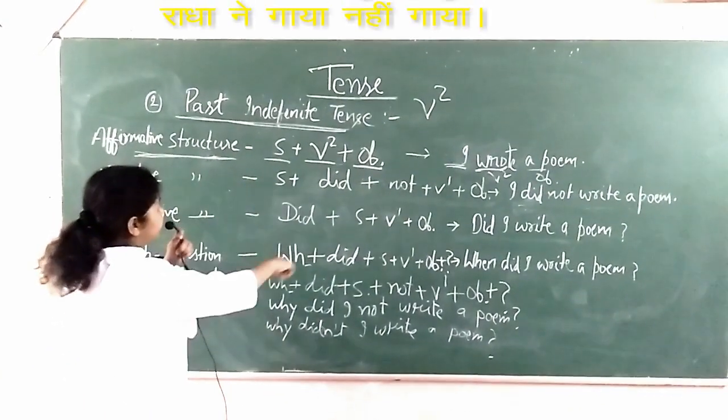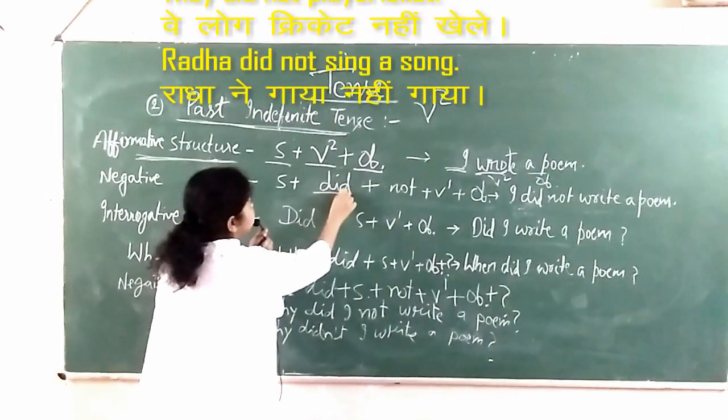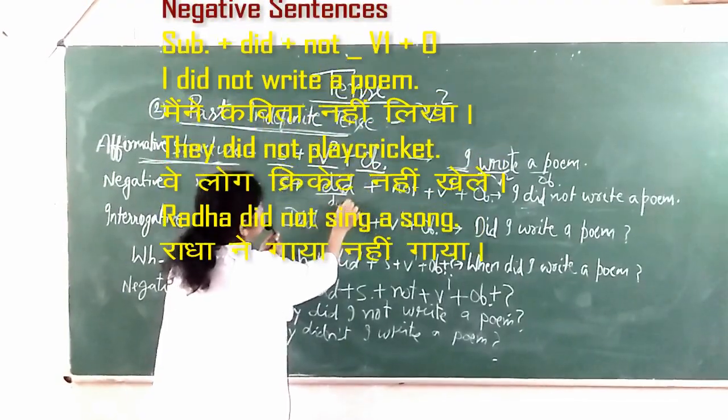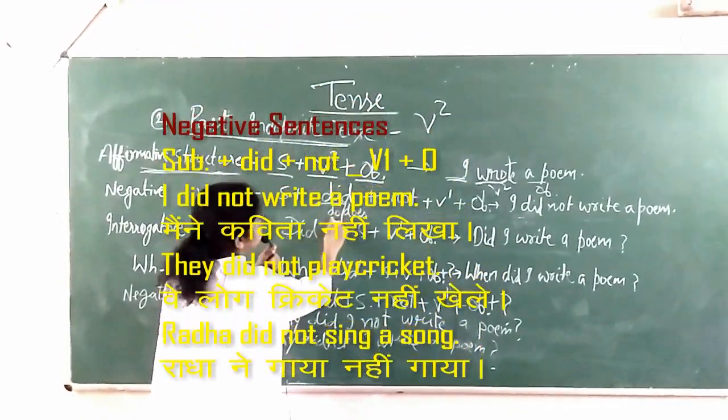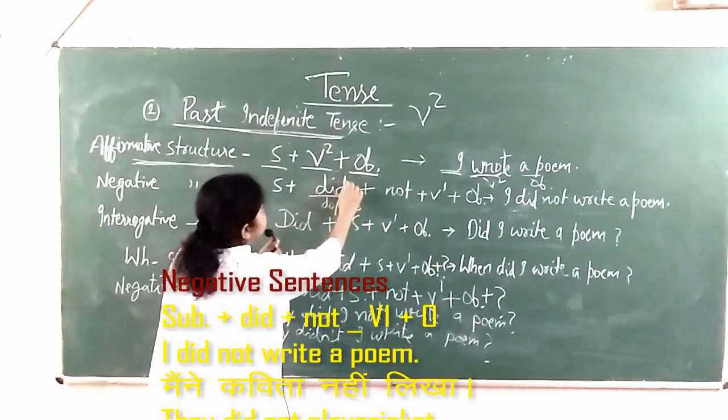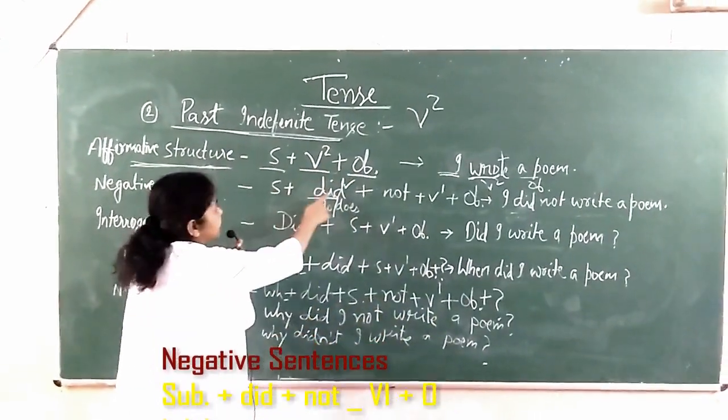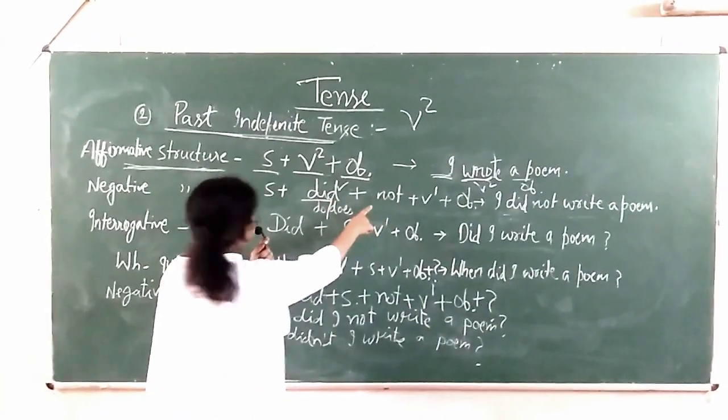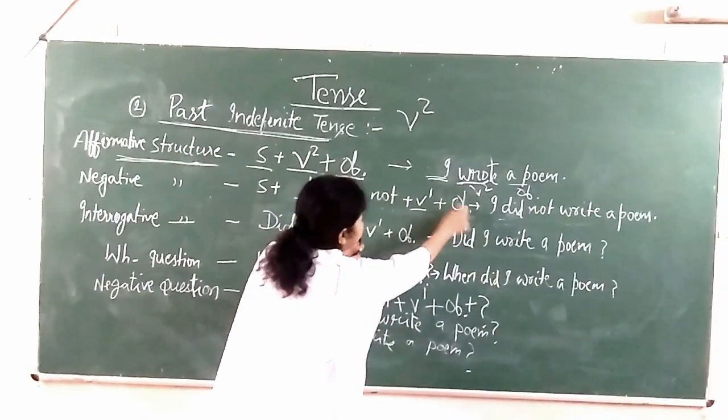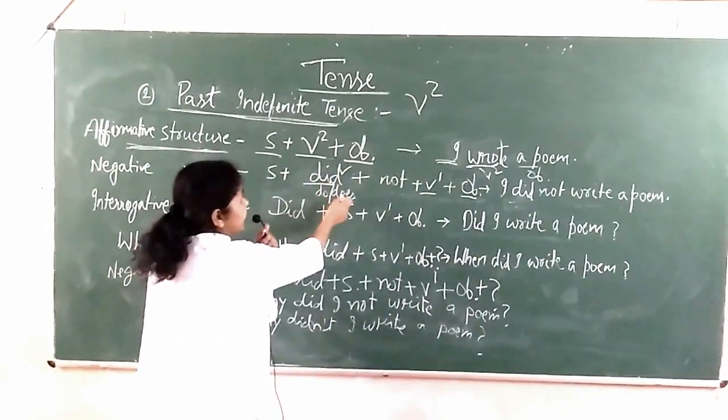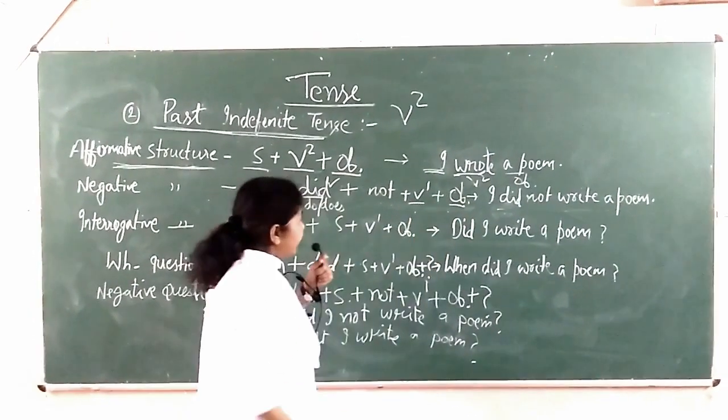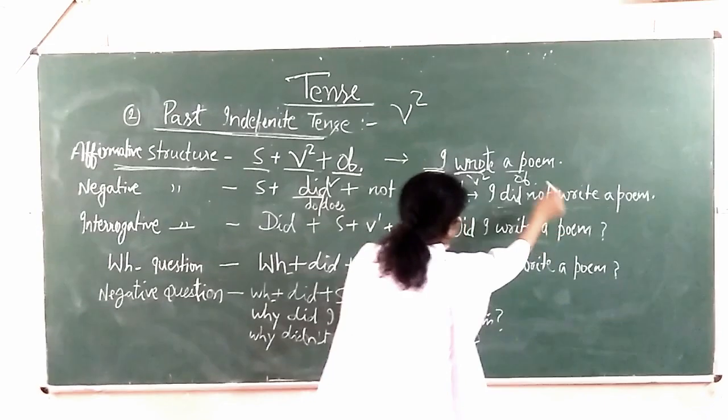Negative sentence we use did. Did + V1. In present indefinite we use V2 or V1+s, but in past indefinite we always use V1. Subject + did not + V1 + object. Maine ne kavita nahi likhi. I did not write the poem.